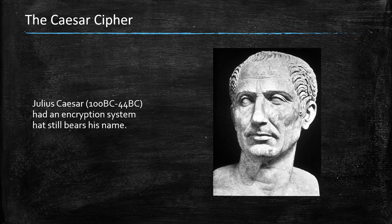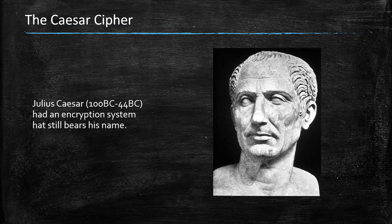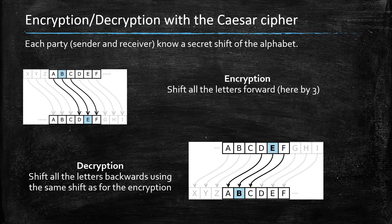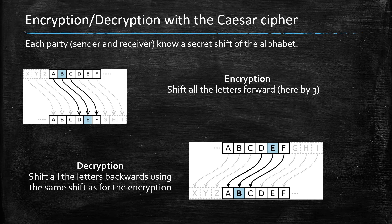So our first example of a cipher, a way of encrypting information, is attributed to Julius Caesar. In fact, it's the most obvious way you could possibly think of encrypting a message, and it's just based on substitutions.